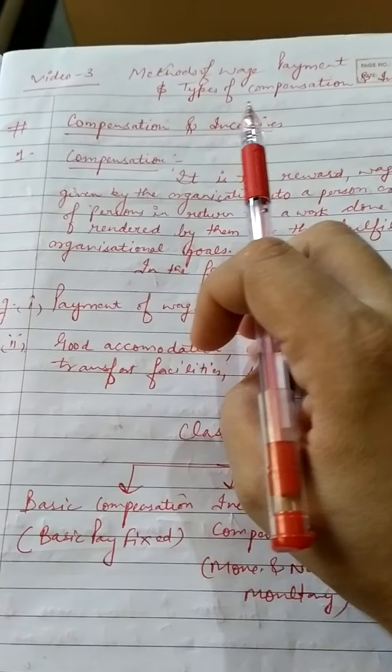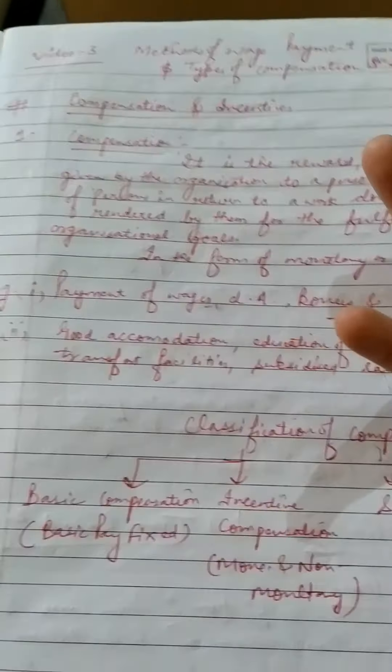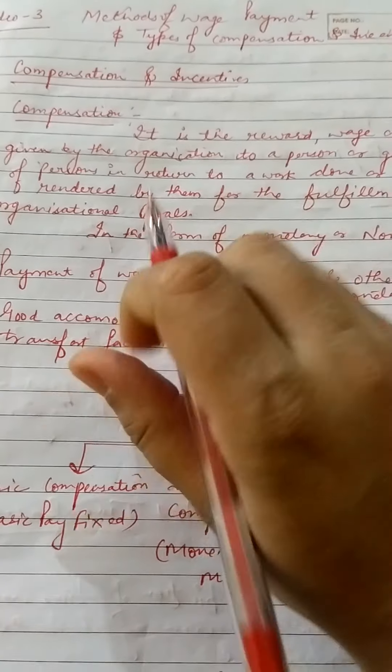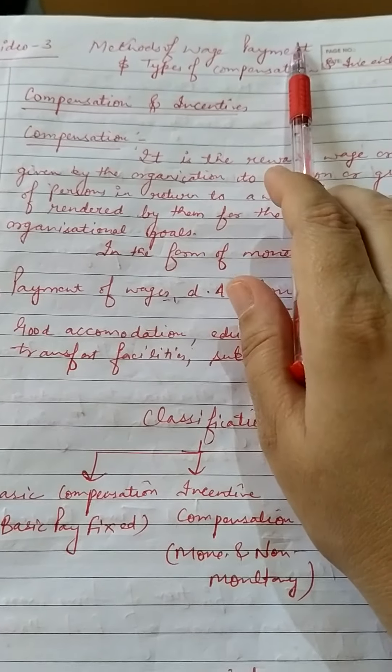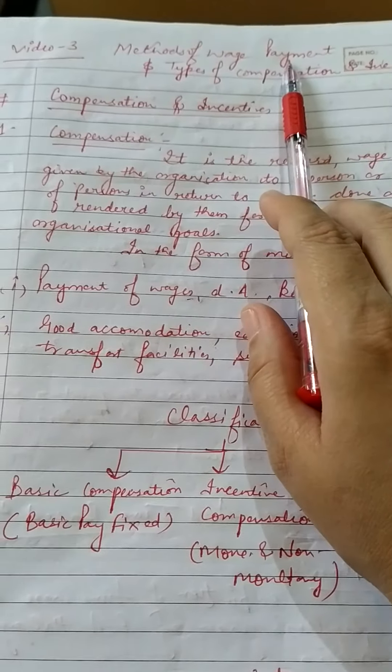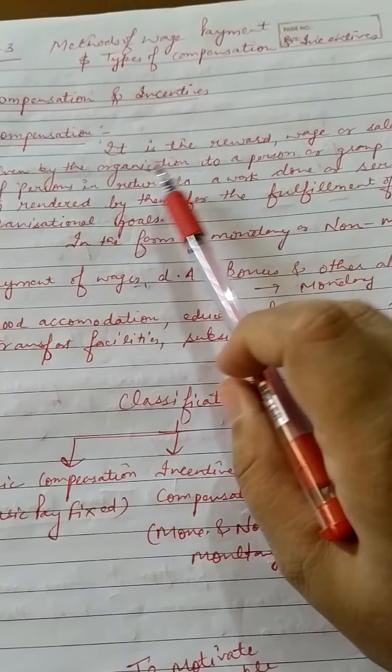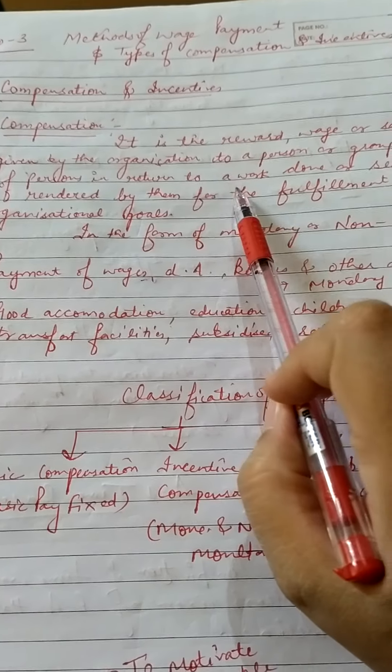Welcome students. This is the third video related to the chapter on methods of wage payment and types of compensation and incentives. In this third video, we are going to discuss various topics related to compensation, incentives, and various monetary and non-monetary incentives. In the previous video, we discussed the meaning of wage payment and the various methods used, like the time wage system and piece rate system.